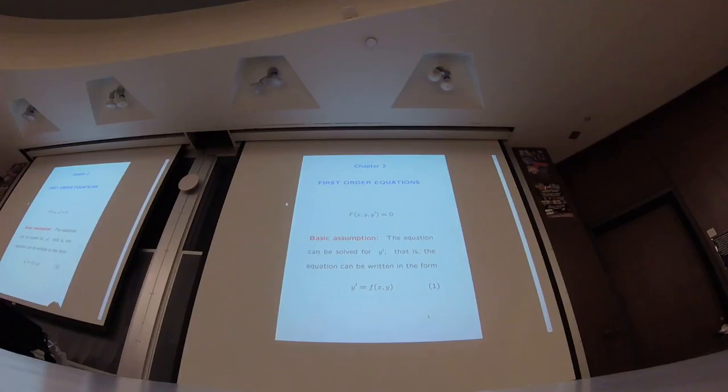So we have a first-order differential equation. You can write it in this form just by putting everything on the left side. So you've got some expression which involves x, y, and y prime. y prime for sure has to be there. Whether x and y are there or not, well, it just depends on the equation. For example, you might have y prime minus y equals 0.